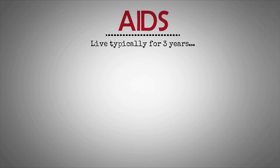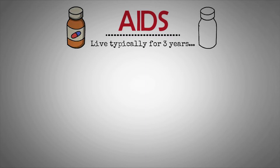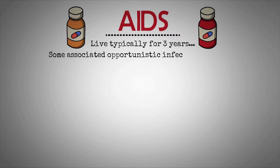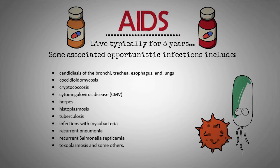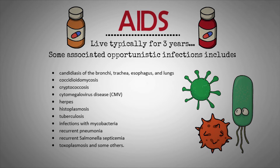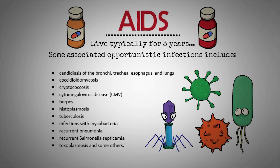Some opportunistic infections that can signal to a doctor that a person has AIDS include: candidiasis of the bronchi, trachea, esophagus, and lungs; coccidioidomycosis; cryptococcosis; cytomegalovirus disease (CMV); herpes; histoplasmosis; tuberculosis; infections with mycobacteria; recurrent pneumonia; recurrent salmonella septicemia; toxoplasmosis; and others.